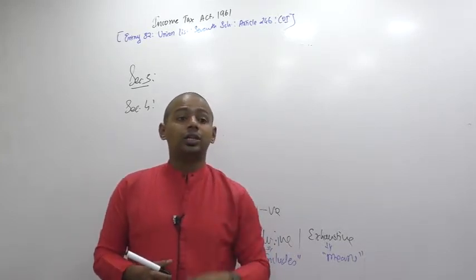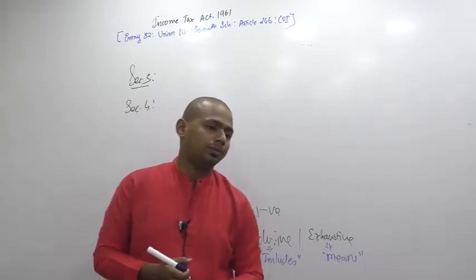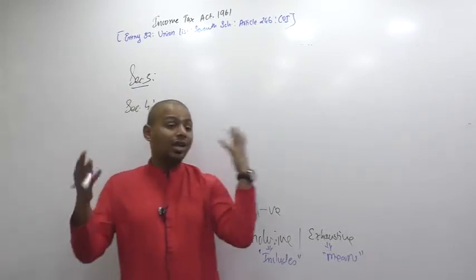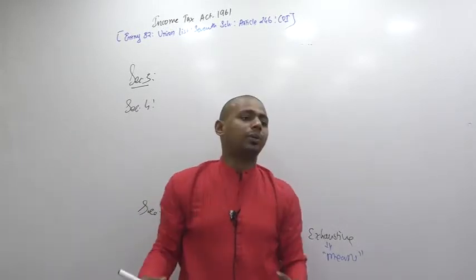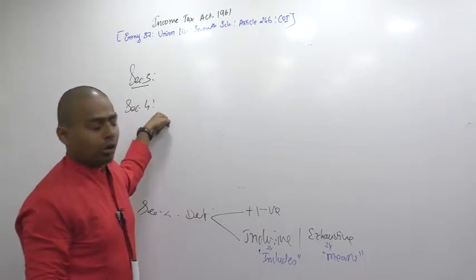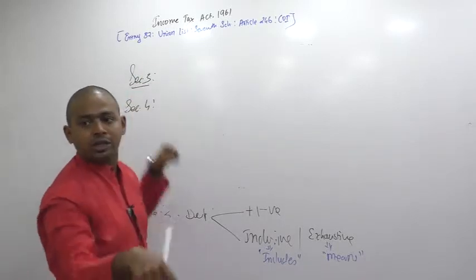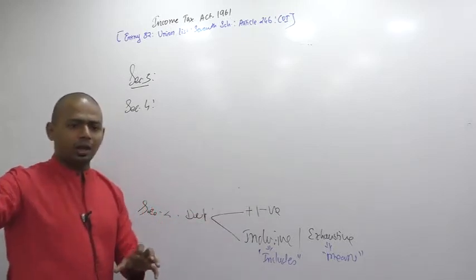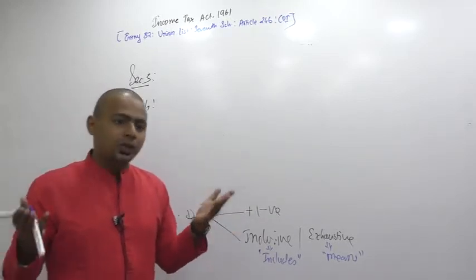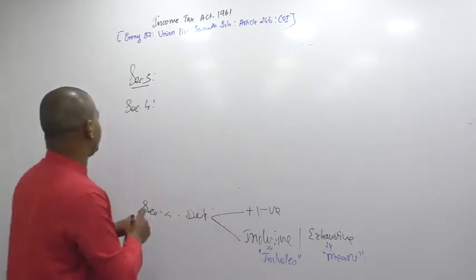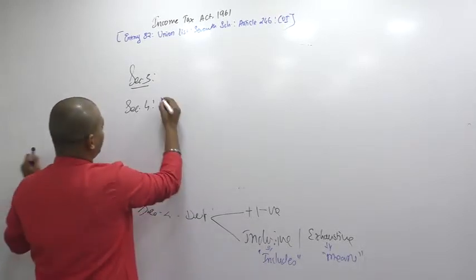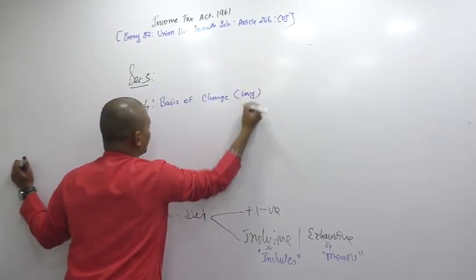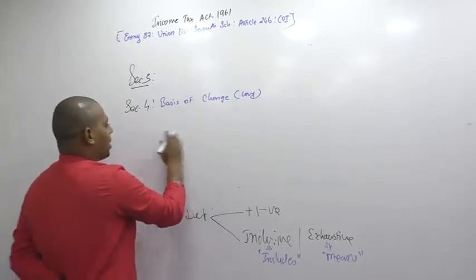What I am trying to tell you is that there is something more important than the backbone — the main section. The main section of income tax is Section 4. Section 4 is the charging section — the basis of charge. It defines exactly what this tax act will tax: on what income is taxable. But there is something more important than Section 4, which is defined in Section 3, because to understand Section 4 you must first understand Section 3.